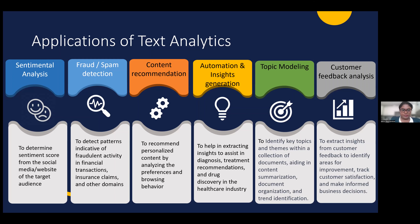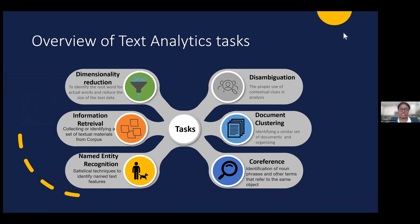Text analytics is vast, so let me walk through its key subtasks. First is dimensionality reduction — a word like 'maximize' or 'maximum' shares the root 'max,' and 'love,' 'lovely,' 'lovable' share 'love.' By identifying root words, the size of the data can be reduced. This technique helps make computation more efficient.